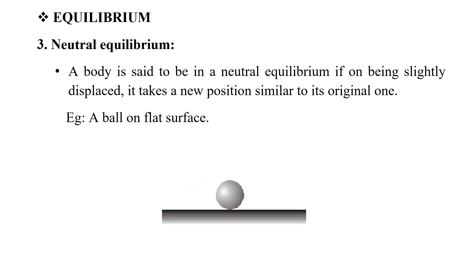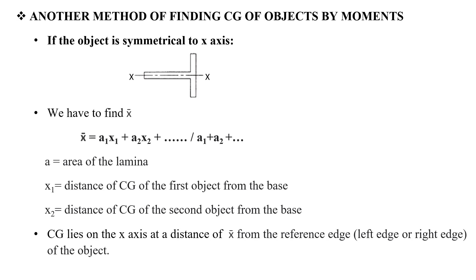The next state of equilibrium is neutral equilibrium. A body is said to be in neutral equilibrium if, when slightly displaced, it takes a new position similar to its original one. For example, a ball on a flat surface.